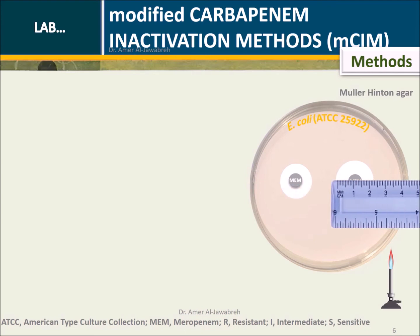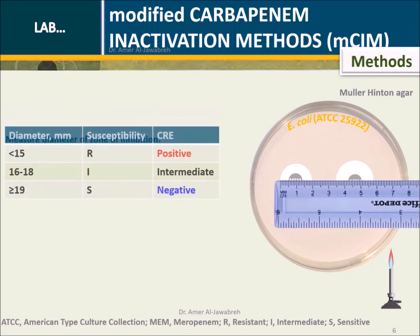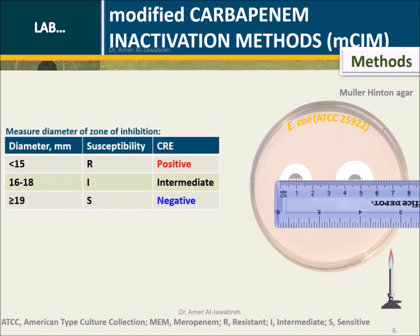Measure the zone of inhibition. If the zone is less than 15 mm, the bacteria is resistant and considered CRE positive. If equal to or greater than 19 mm, it is negative and considered CRE negative.